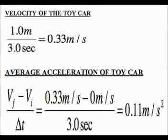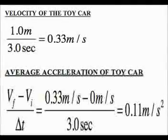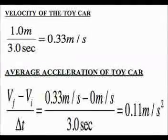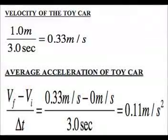The car takes 3 seconds to travel the 1 meter course, so its final velocity is calculated as 0.33 meters per second.